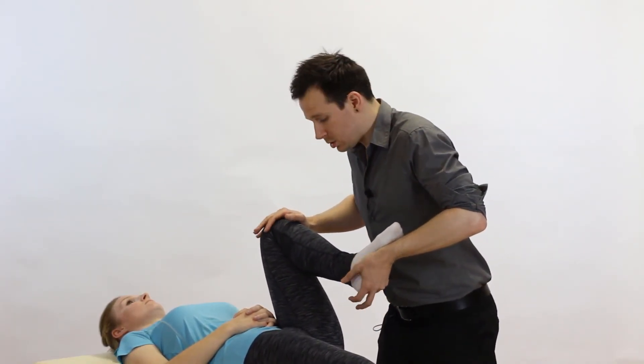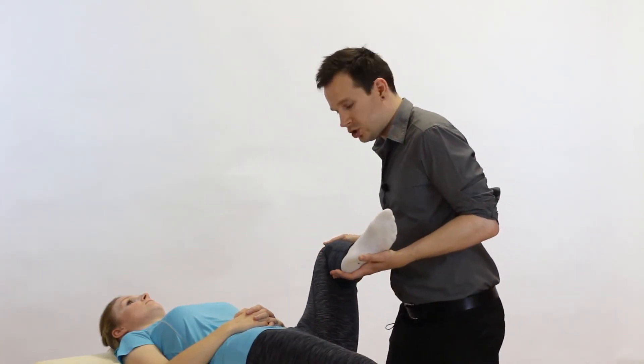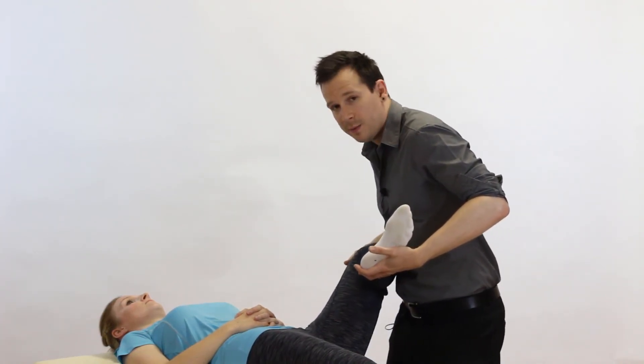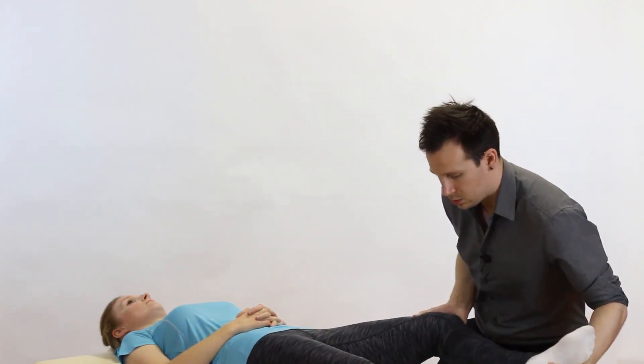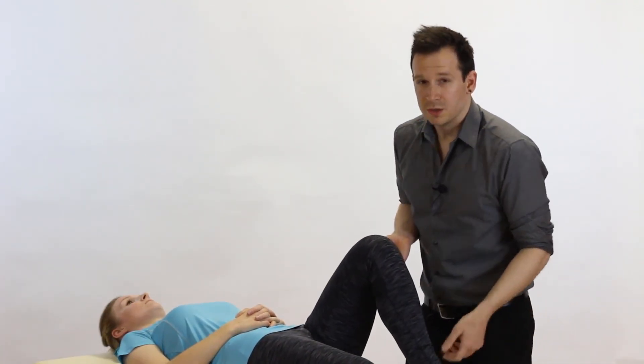We're going to do the outside part, so full flexion, abduction this time, external rotation—so we're jamming this part of the hip—and then we're coming all the way down. So they're the two tests.